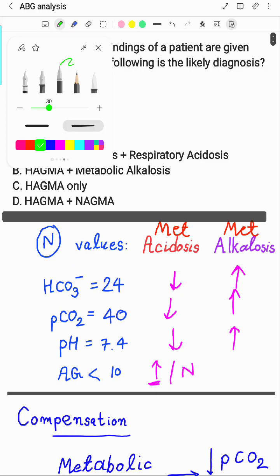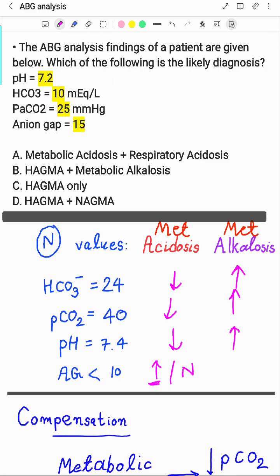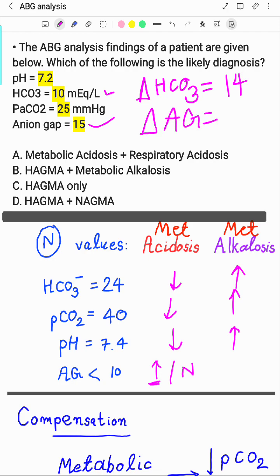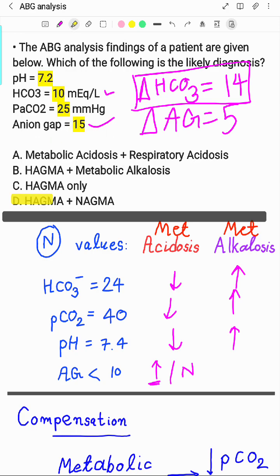Let's look at the question again. Bicarb is 10, PCO2 is 25 (well compensated), anion gap is 15. Delta bicarb = 24 minus 10 = 14. Delta anion gap = 15 minus 10 = 5. Delta bicarb is more than delta anion gap, which means apart from high anion gap metabolic acidosis, there is something else reducing bicarb further — which means there is also normal anion gap metabolic acidosis. So the answer is D: HAGMA plus NAGMA.